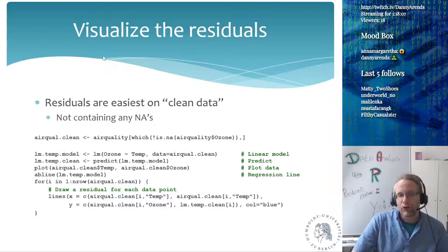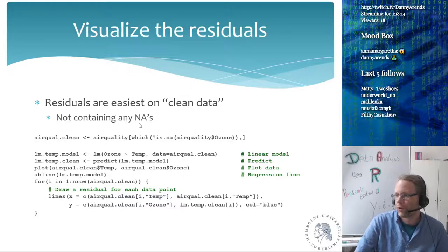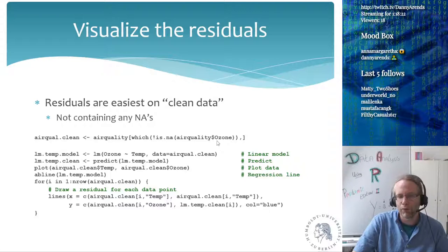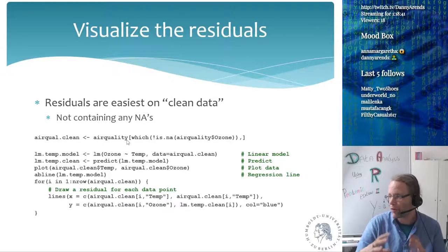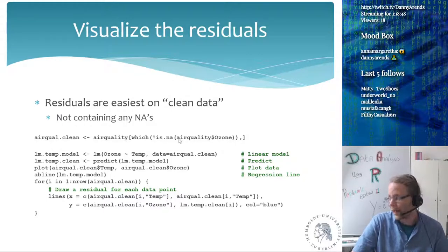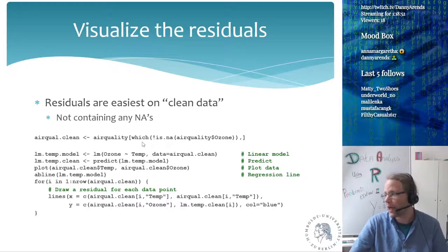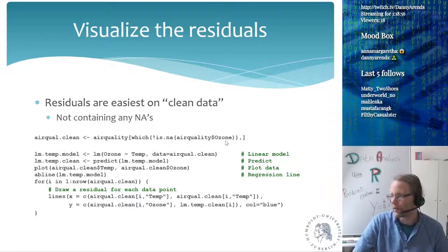Residuals are most easily visualized on clean data, so we first remove any NA values. If any ozone measurements are NA, we use the is.na function with the not operator to subset only rows with real values, and store this as airqual.clean. Then I do a linear model of ozone by temperature using the clean data.